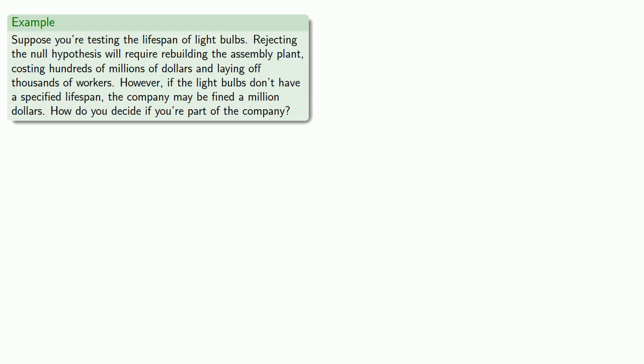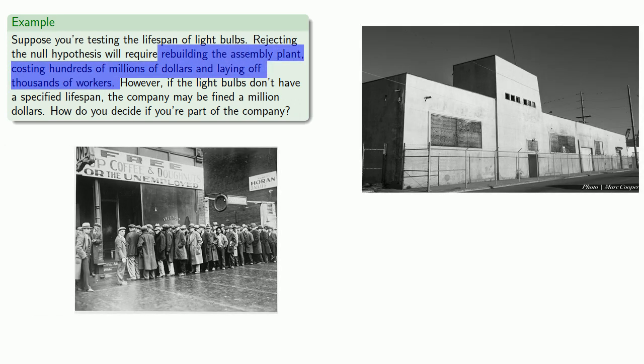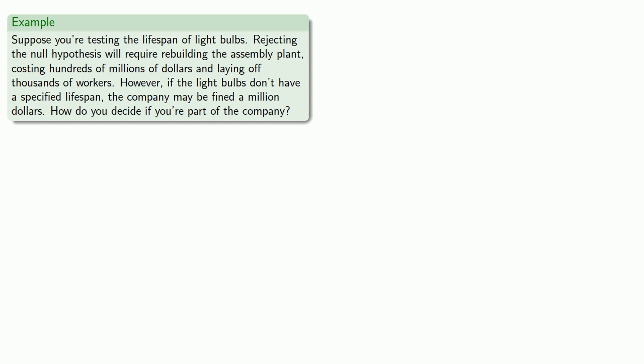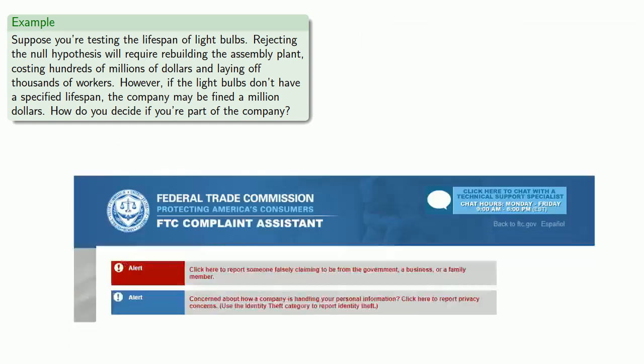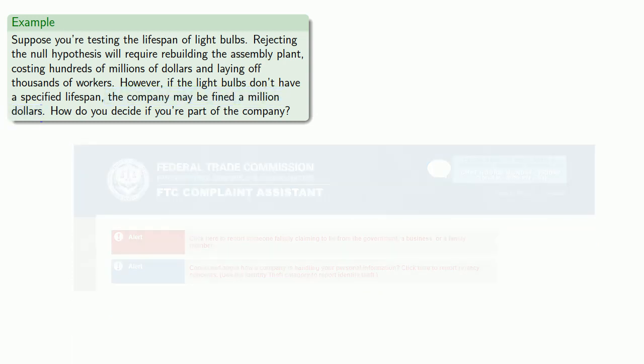Suppose we know that rejecting the null hypothesis — concluding the light bulbs do not have a lifespan of 10,000 hours — requires rebuilding the assembly plant, costing hundreds of millions of dollars and laying off thousands of workers. On the other hand, if the light bulbs don't have the specified lifespan, the company may be fined a million dollars. How would you decide if you were part of the company?